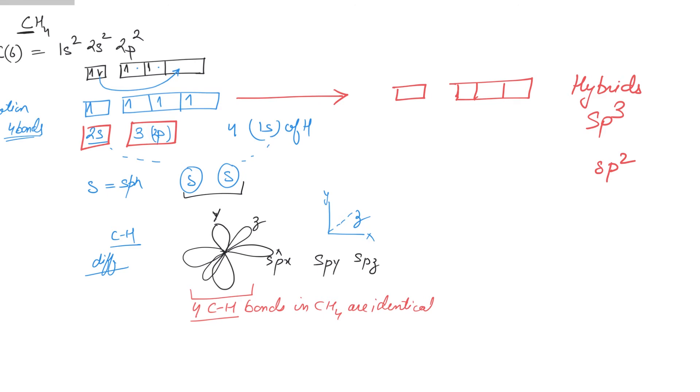The total number of orbitals must equal the number of orbitals involved. We have one s and three p in this case, so we have four sp³ hybrid orbitals which are involved in the bonding.